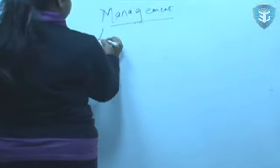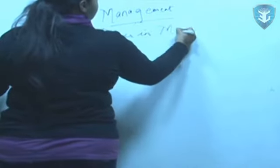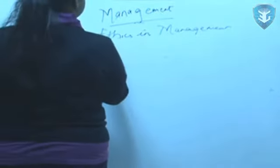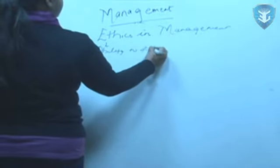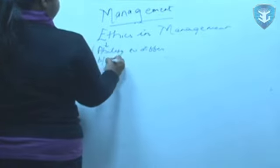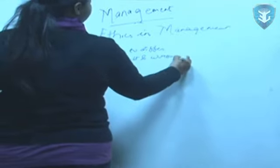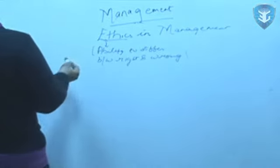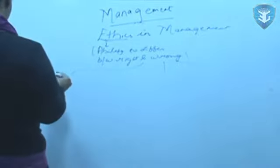Now a very important aspect of management that is recently in trend, it is your ethics in management. One is ethical when he has ability to differ between right and wrong. When someone is good enough to identify that this act is right and this act is wrong, the person is called to be ethical. When talking about ethics in management, we can classify them into three types.